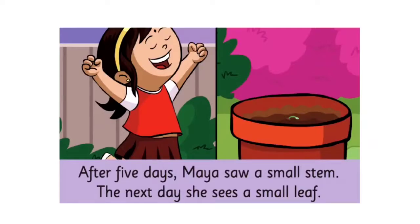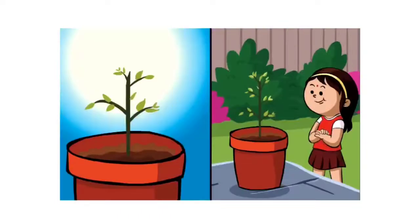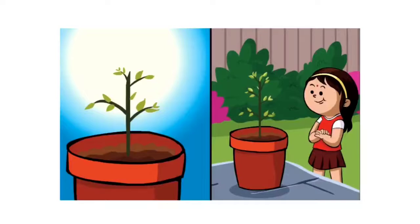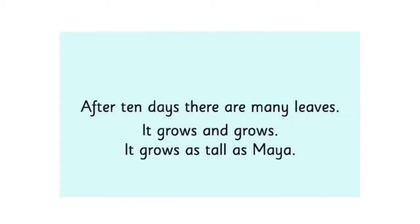Now look at Maya. How is she? She is overjoyed — look at her face. She is actually very happy, because you can see a small stem has come out of the seed with a small leaf. What does this picture reflect? A small plant has grown up from the seed, and Maya is watchful to that plant. Again sentences, so we will move on to the next page.